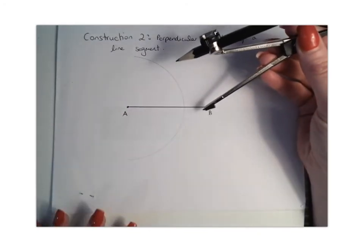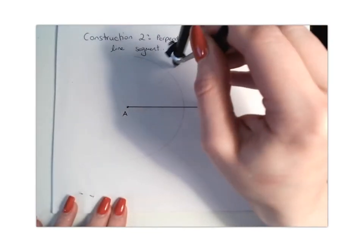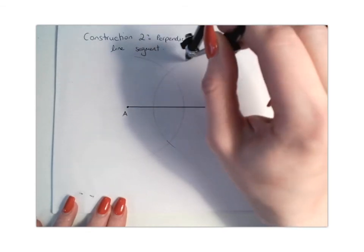You'll then keep your compass the exact same width and place it at point B. Again, you can just draw an arc above and below the line like so, or continue the whole way around.